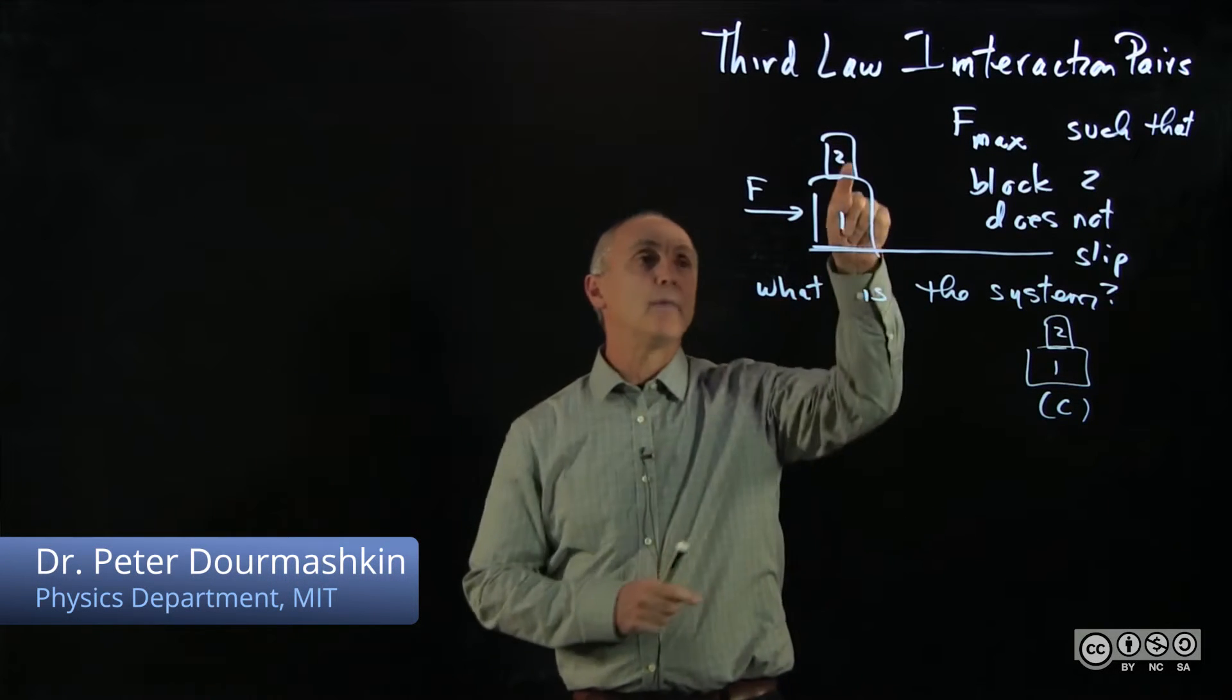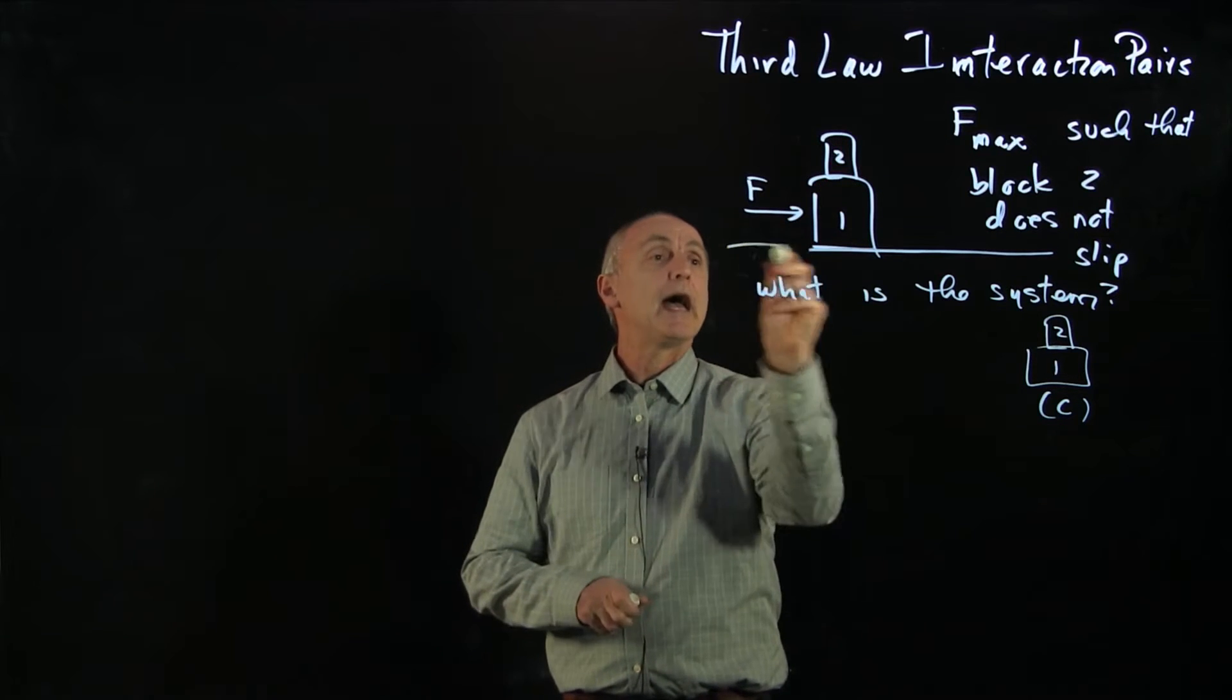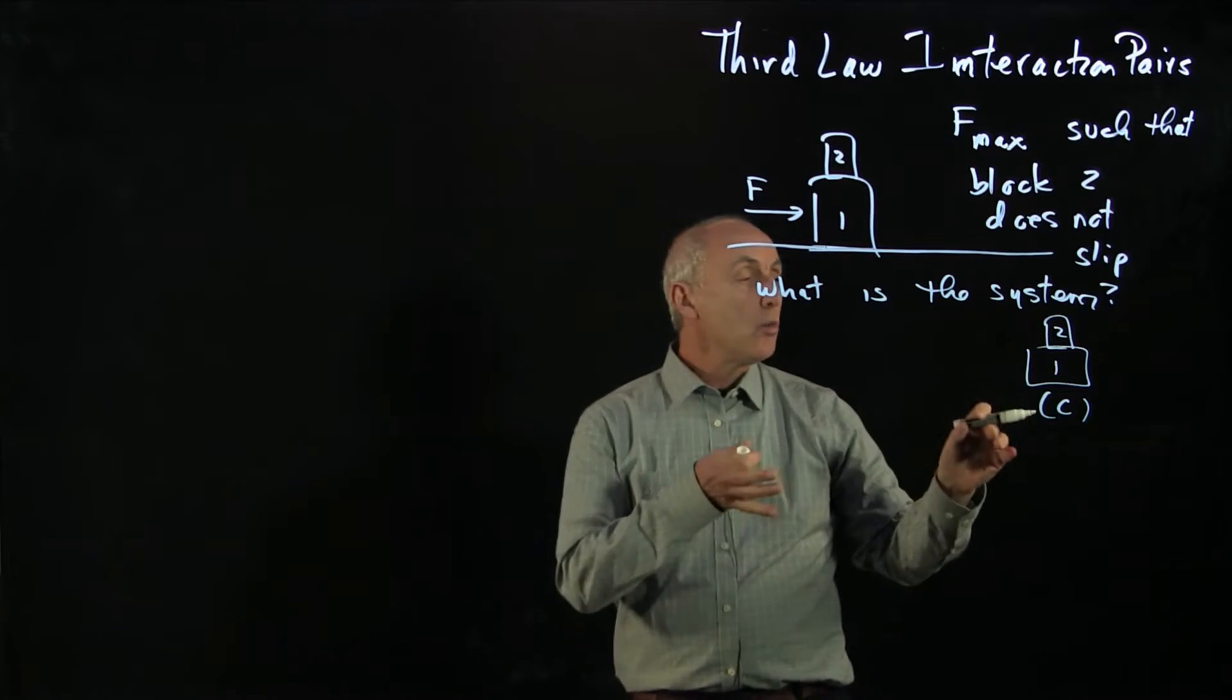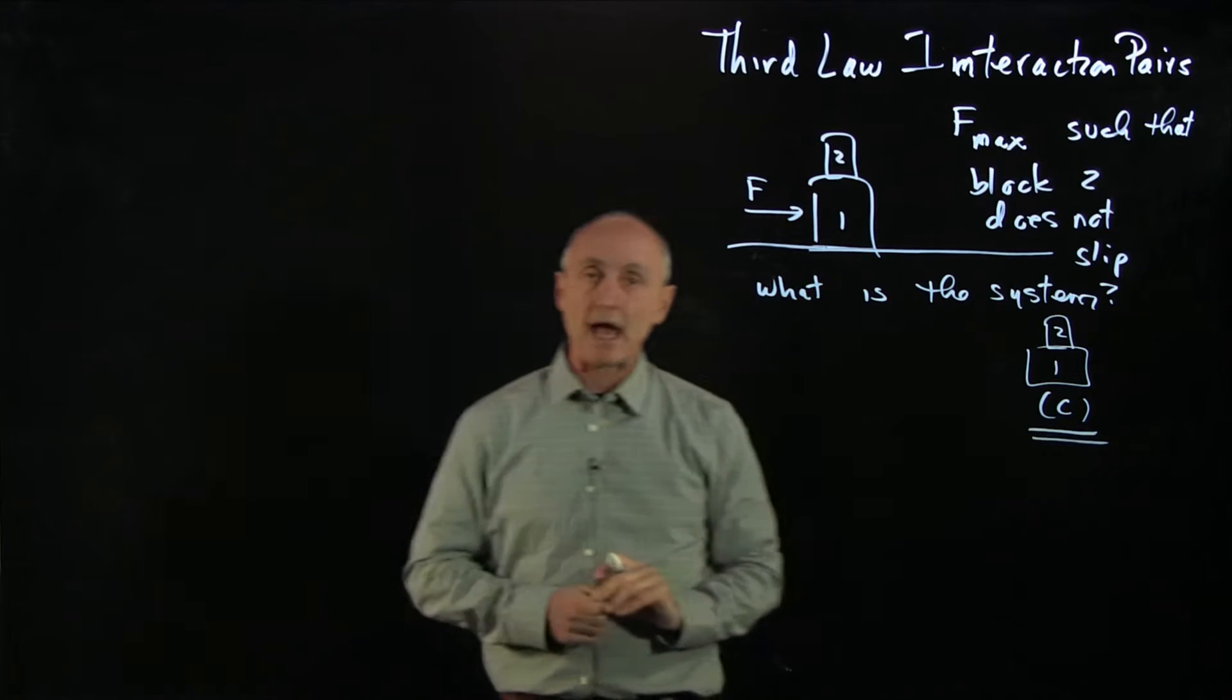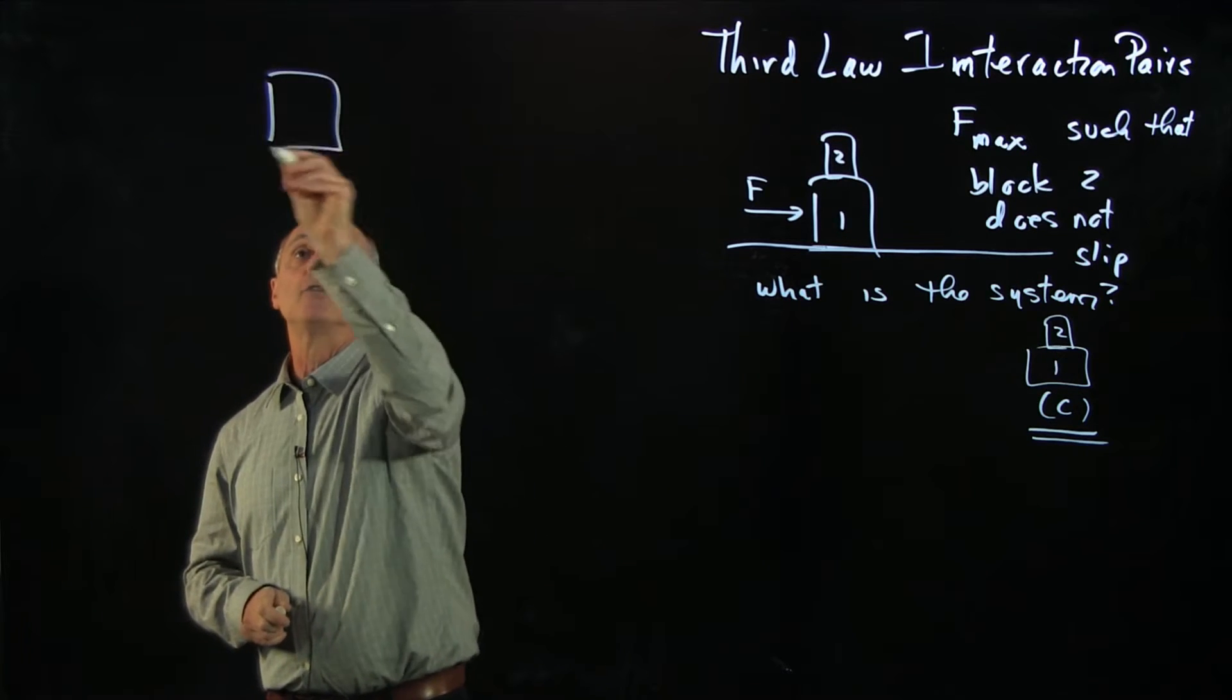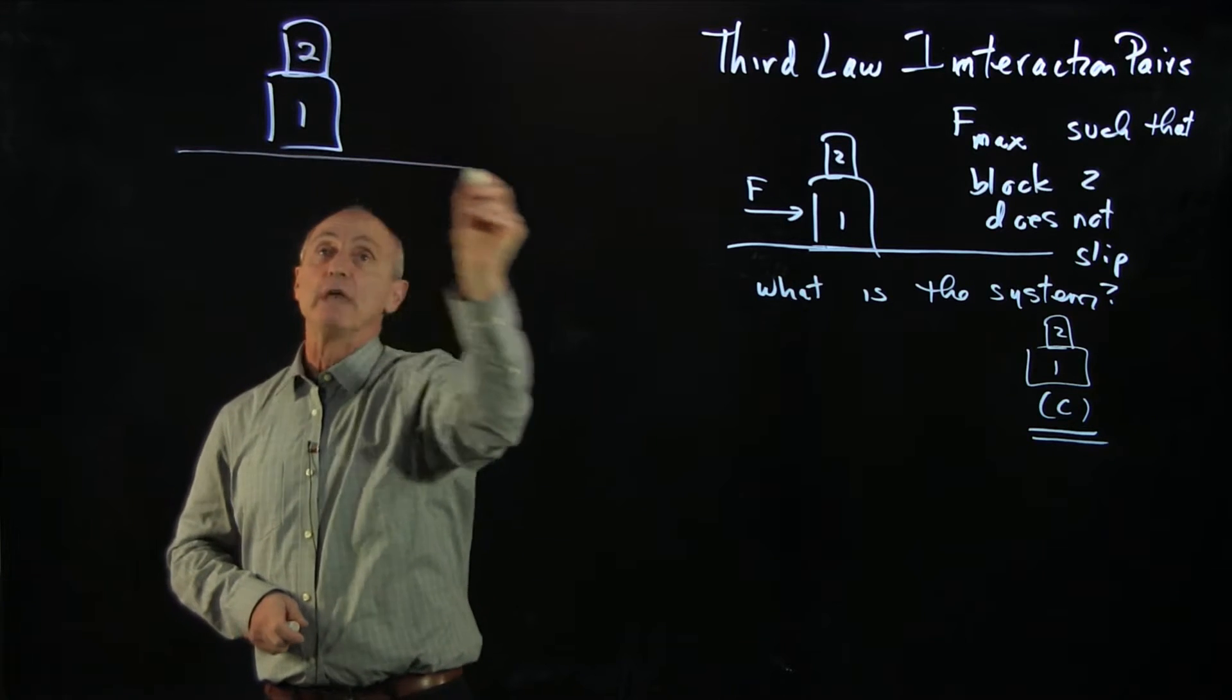When we analyze the problem about putting two blocks along a frictionless surface and pushing one and asking what is the maximum force such that block two does not slip, we have three different systems. And now I want to focus a little bit on what would happen if we just naively chose our systems as both blocks together. So let's try to look at the types of issues that come up when we do that.